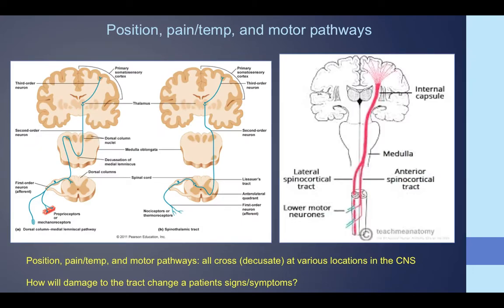The thalamus, highlighted in those pictures, is the relay area for all sensation. If the thalamus is completely destroyed, all sensation will be gone — a pure sensory stroke. The internal capsule is highlighted on the right, and that's the pathway that most motor pathways travel. If the internal capsule is damaged, it would result in a pure motor stroke affecting the entire side of the body.